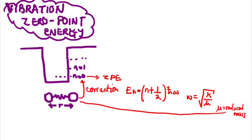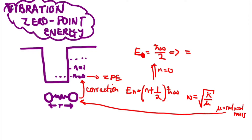This results in the ground state at n equals zero, where E₀ is equal to ½hω — h being the Planck constant and ω the angular frequency. This proves that the zero point energy is non-zero and is a positive value.